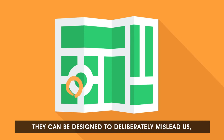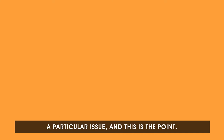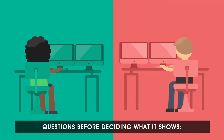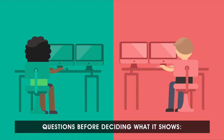So do maps lie? Well, kind of. They can be designed to deliberately mislead us or influence us one way or another about a particular issue — and this is the point. Maps aren't neutral. Map makers can lie. It always helps to look at a map with a critical eye. Next time you look at a map, ask yourself the following questions before deciding what it shows: Who made it? Why did they make it? What does it actually tell us?